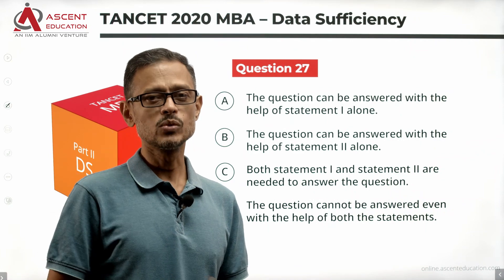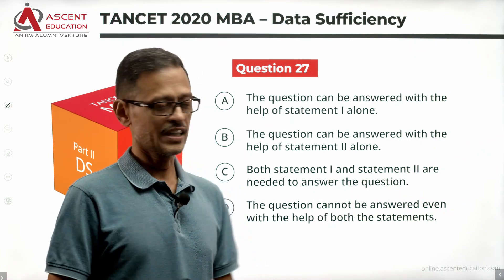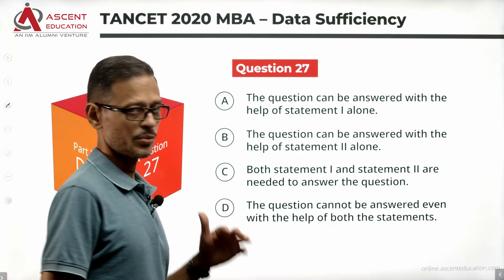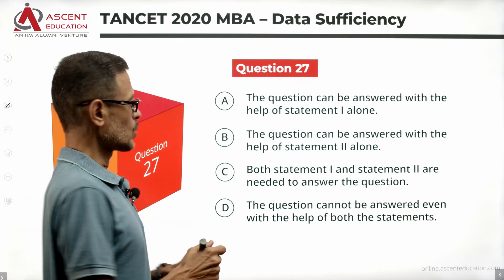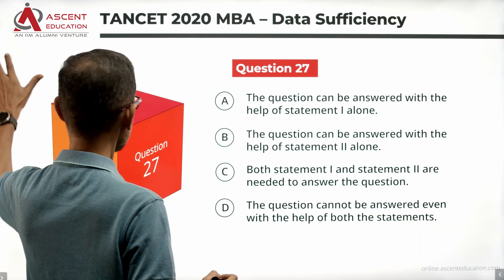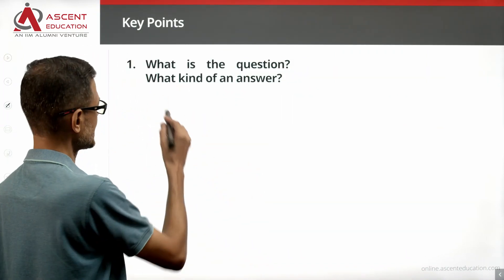If the data is insufficient even when both statements are combined, then the answer option is D. So let's quickly look at what the question is: How old is Sam in 1997?